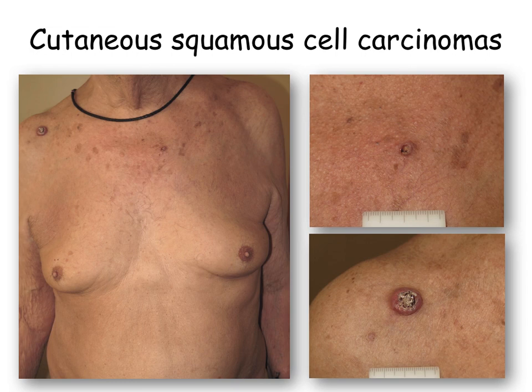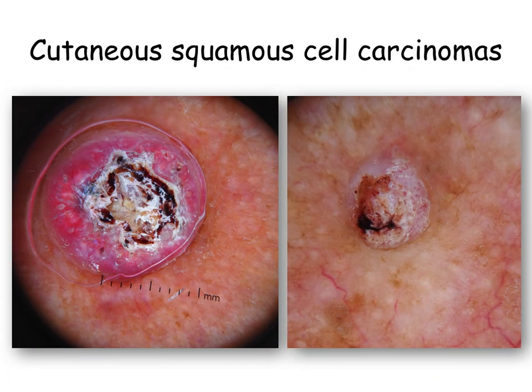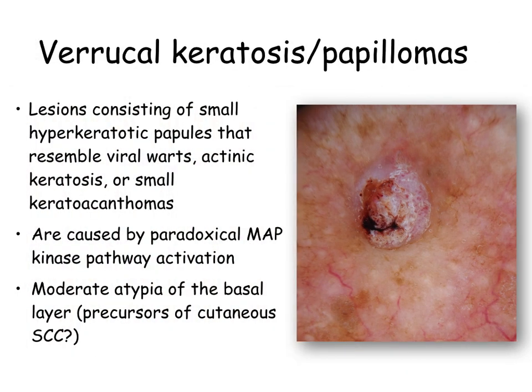Our second patient has two lesions on his trunk. With the use of our dermatoscope, we can easily diagnose the squamous cell carcinoma on the left and the verrucal keratosis on the right. Under the term verrucal keratosis, we describe lesions consisting of small hyperkeratotic papules that resemble viral warts, actinic keratosis, or small keratoacanthomas, and are quite common with BRAF inhibitors.